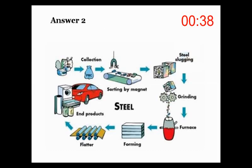This graph gives information about the process flowchart of steel. To begin with, we can see that there are several sections in this picture, including collection, sorting by magnet, steel slugging, grinding, furnace, forming, flattening, and end products.